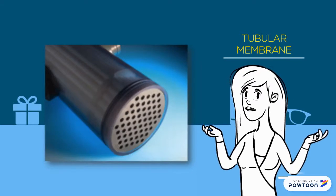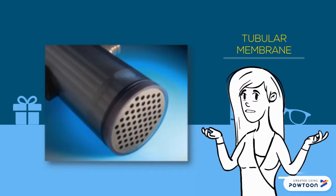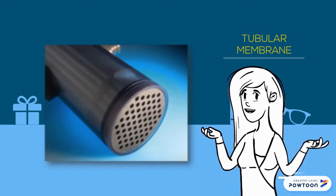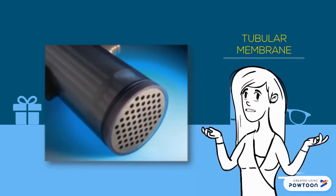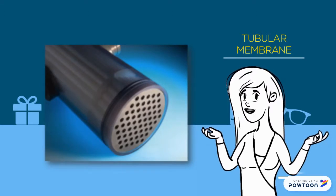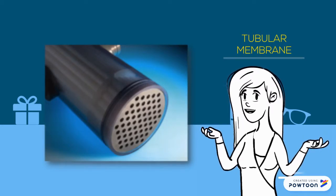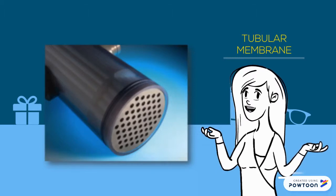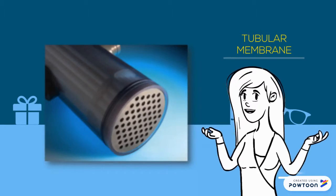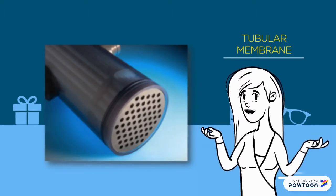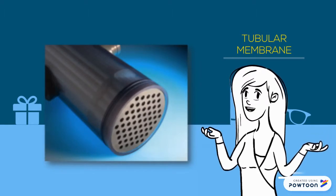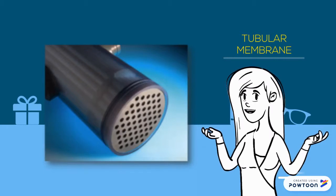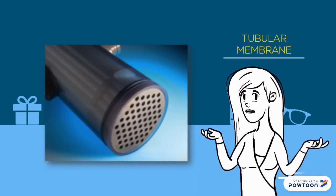Tubular membrane modules are tube-like structures with porous walls. Tubular modules consist of a minimum of two tubes: the inner tube called the membrane tube, and the outer tube which is the shell. Tubular modules work through tangential cross-flow and are generally used to process difficult feed streams such as those with high dissolved solids, high suspended solids, and lipids such as oil, grease, and fats.